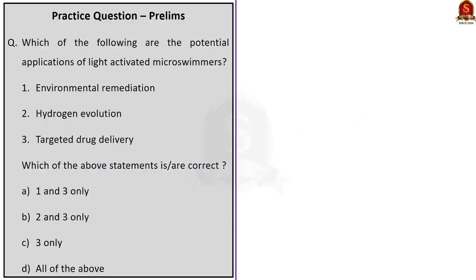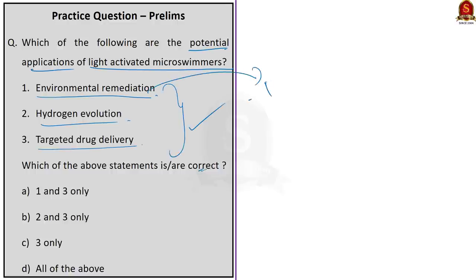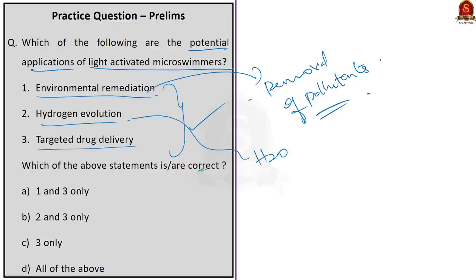Question 2: Which of the following are the potential applications of light-activated microswimmers? Statement 1: Environmental remediation. Statement 2: Hydrogen evolution. Statement 3: Targeted drug delivery. All the statements are correct. Environmental remediation means removal of pollutants or contaminants from water and soil; light-activated microswimmers can be used for active photocatalytic degradation of methylene blue. Hydrogen evolution is the production of hydrogen through water electrolysis; light-activated microswimmers are also used here. And we discussed today that they are also used in targeted drug delivery. So the correct answer is option D — all the above.